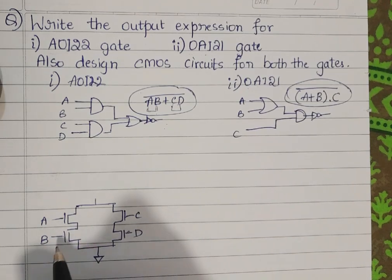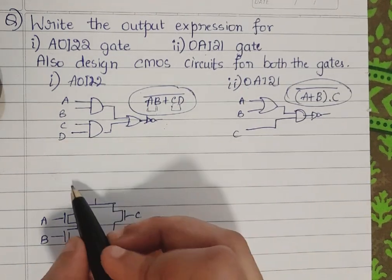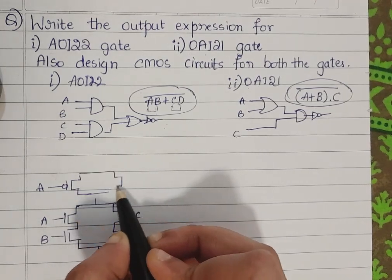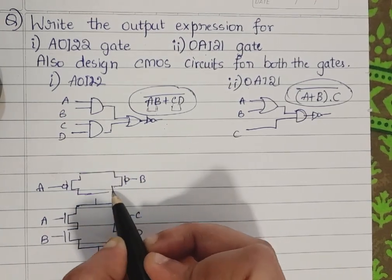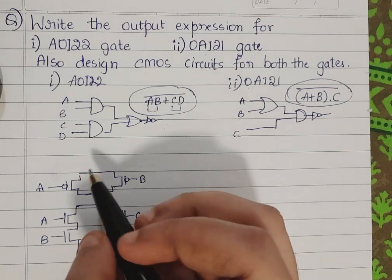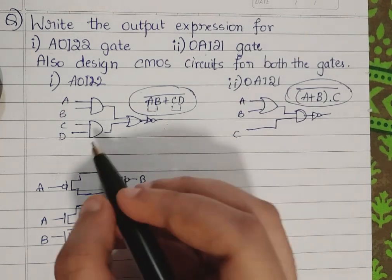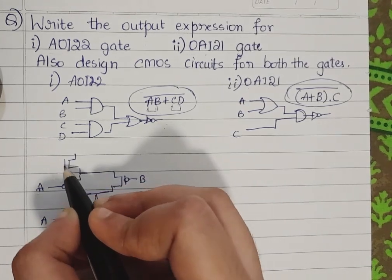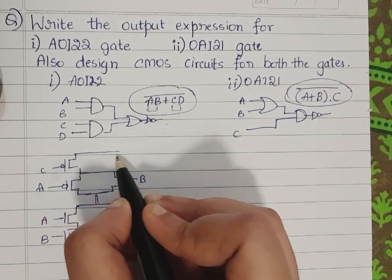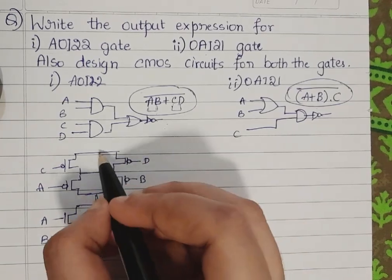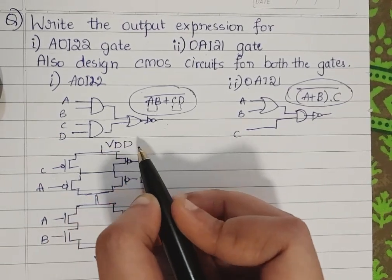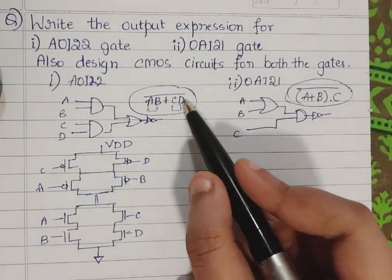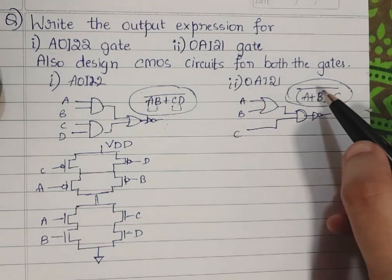The PMOS is the dual structure of the NMOS. That is the inverse of the NMOS structure — A and B should be in parallel, so PMOS has A in parallel with B, and similarly C in parallel with D, with both groups in series, connected to VDD. This is the CMOS structure for this gate.